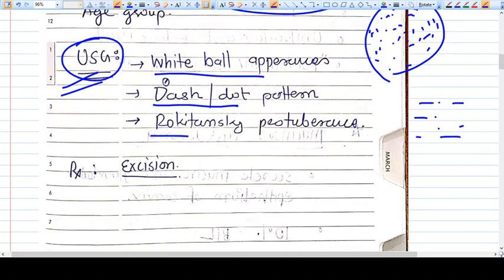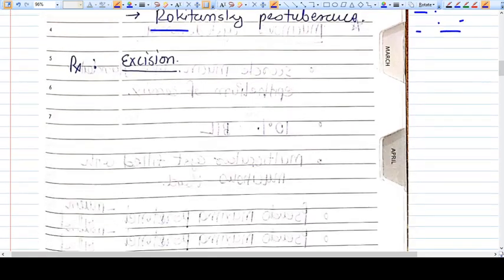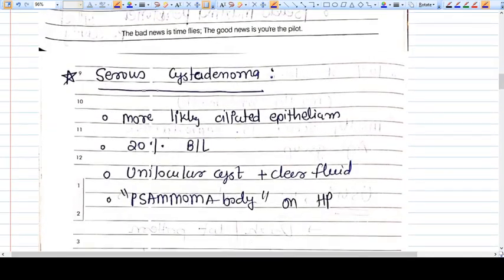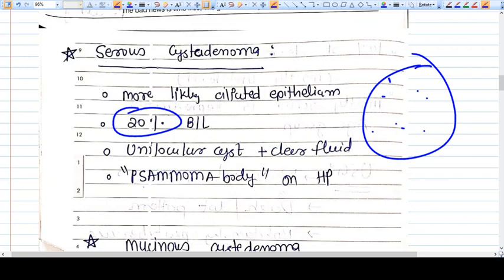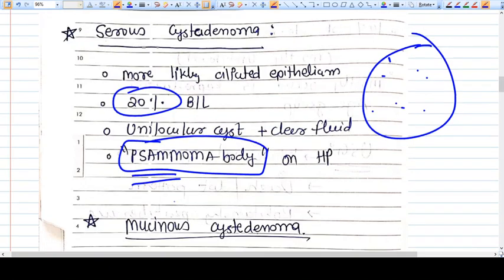Now let's go to serous cystadenoma. The name suggests serous, meaning clear fluid with no loculations. If you see serous cystadenoma, very clear fluid will be seen, no septa since it's unilocular. 20% are bilateral and the histopathological characteristic is psammoma bodies.